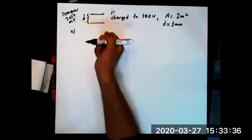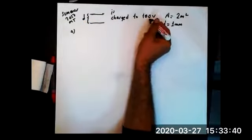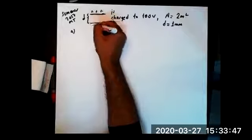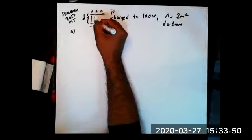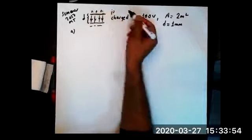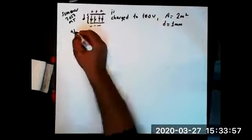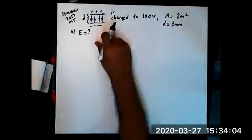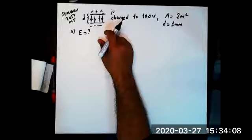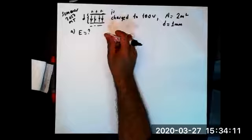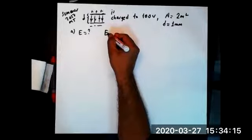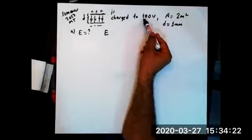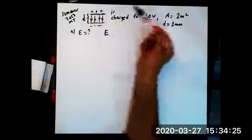So the first question is, since the capacitor is charged, let's make the upper plate as plus charges and lower plate as minus charges. Obviously there is going to be electric field created between the plates because you charge to 100 volts. The question is, what is the strength of the electric field between the plates? How do we express the electric field if you know the potential difference is 100 volts and the distance is 1 millimeter?